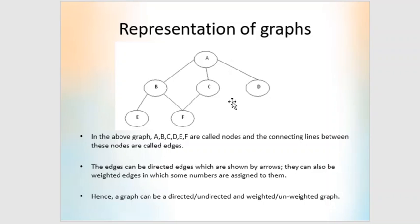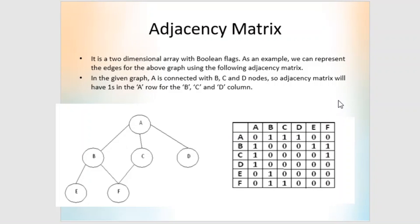This is an example graph. We have vertices A, B, C, D, E, and F, with some edges between them. Let us see how this graph can be represented using adjacency matrix notation, adjacency list notation, and so on.